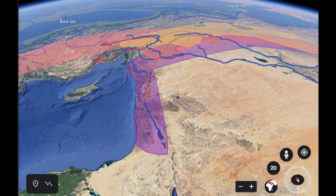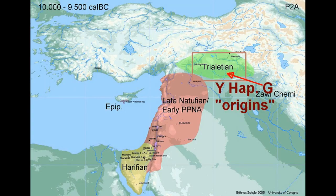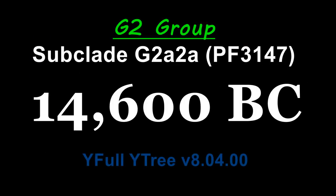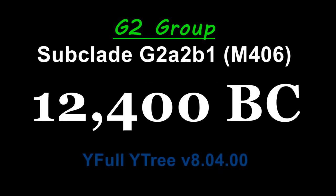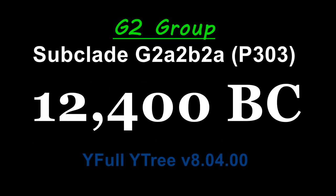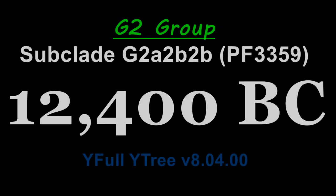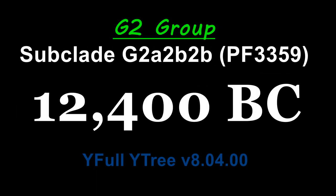Some of the G2 sub-clades that formed in the valleys of northern Syria were: PF-3147, which formed around 14,600 BC; L30, which formed around 14,600 BC; M406, which formed around 12,500 BC; P303, which formed around 12,400 BC; and PF-3359, which formed around 12,400 BC.